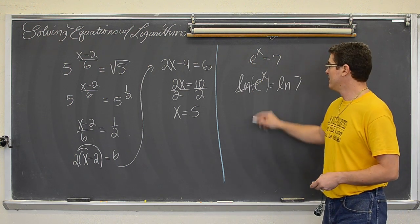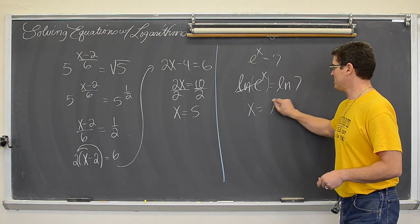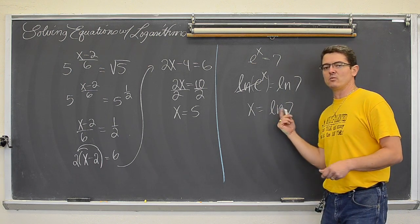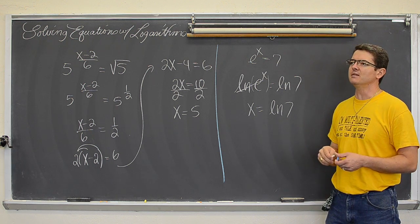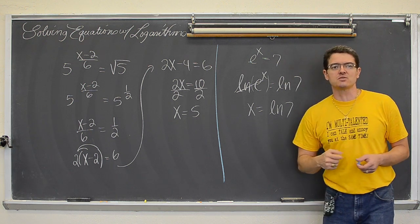They will cancel out and undo each other. This just becomes x equals the natural log of 7 and whatever decimal comes out of your calculator is the answer. Let's see... Yeah, I just have that written as natural log of 7.